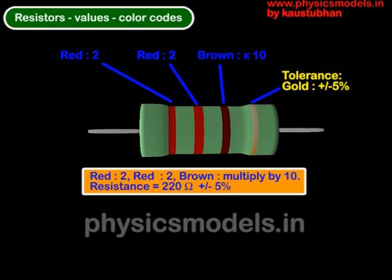So that makes it 2, 2, brown means multiplied by 10 so 220 ohms and the last band which is gold gives the manufacturing tolerance of plus minus 5% of 220 ohms.